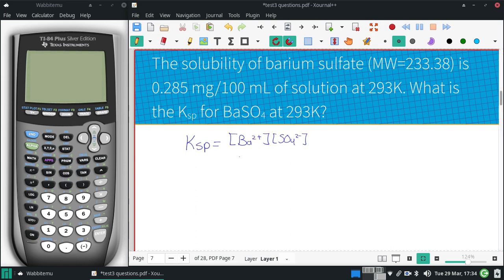In terms of our solubility itself, there'd be one barium and one sulfate for every single one of those, so we just need to determine our molar solubility, then if we square it, we'll have our Ksp.